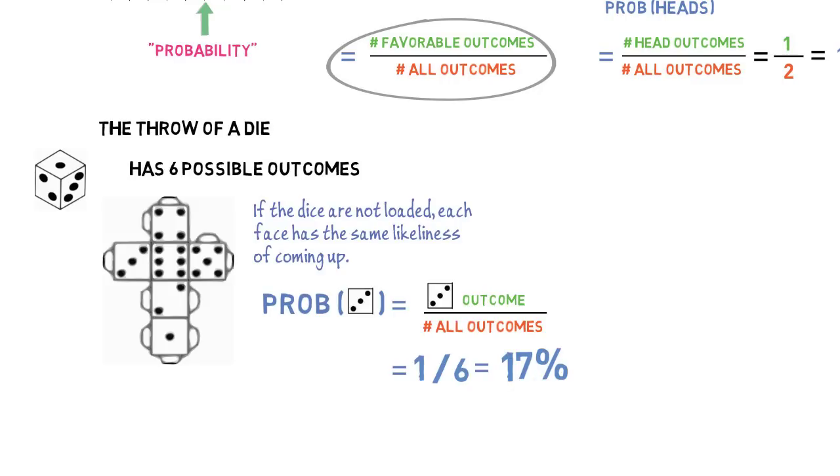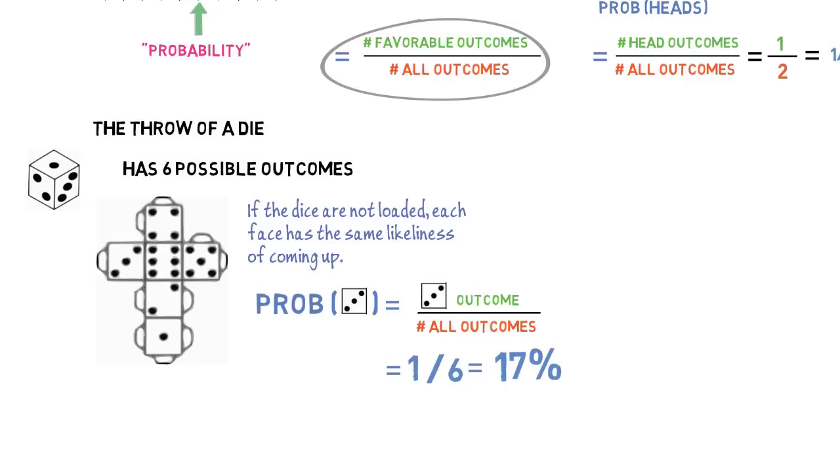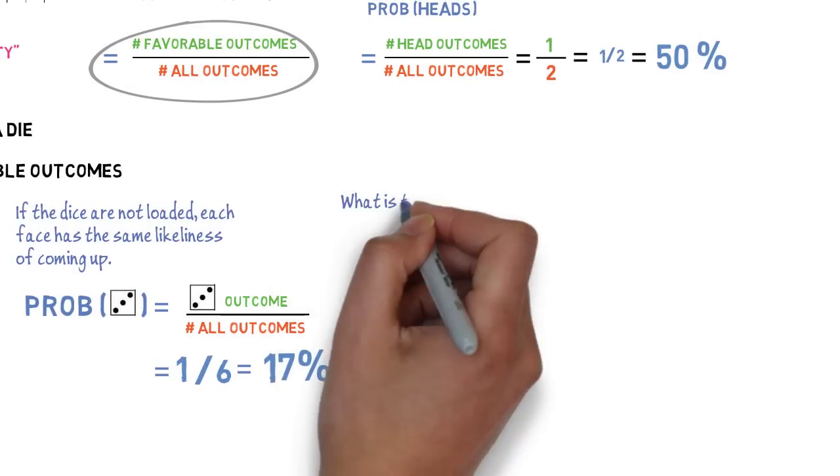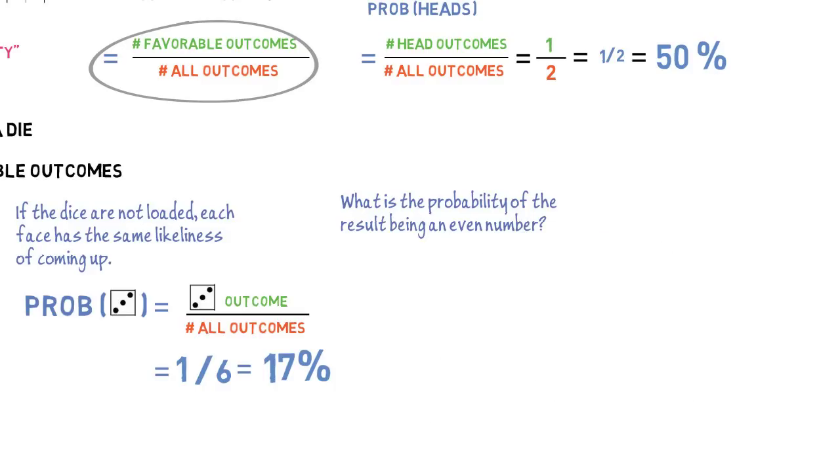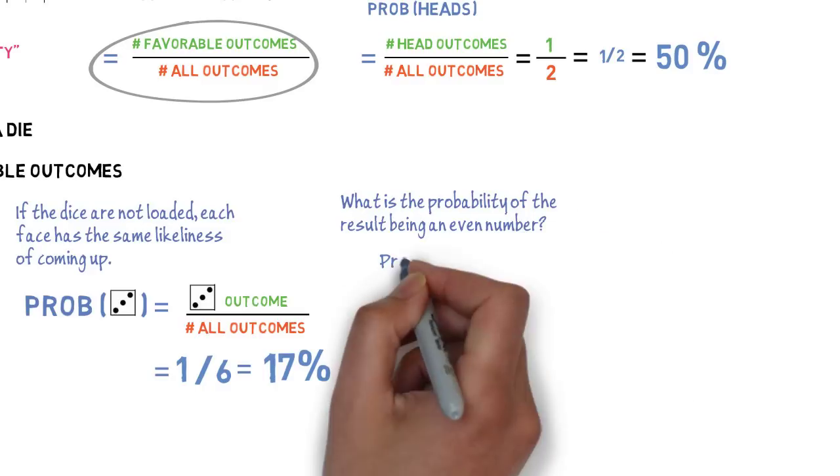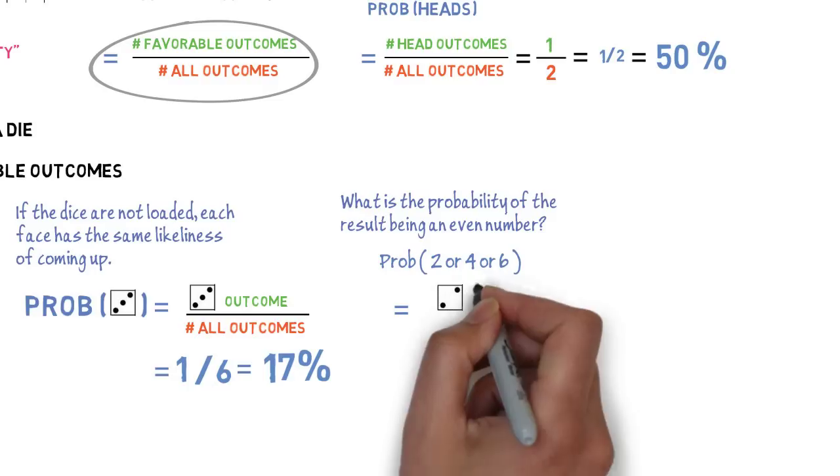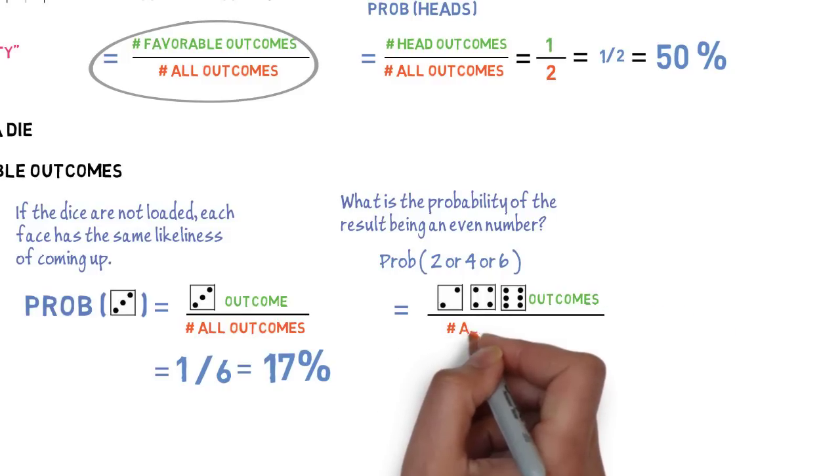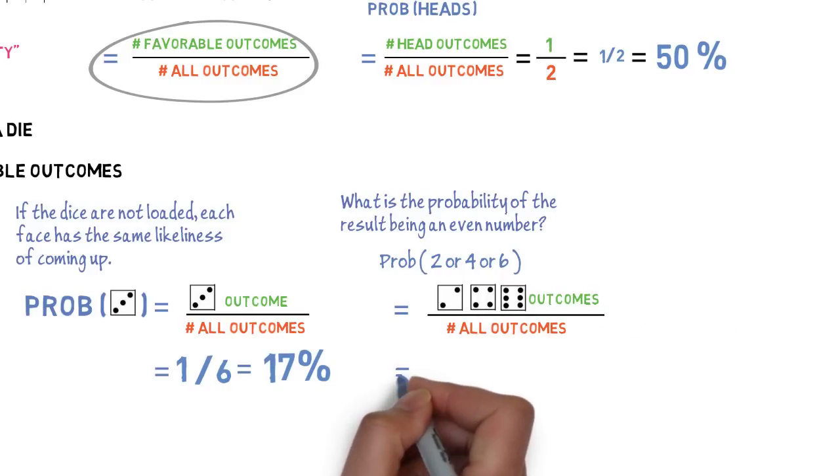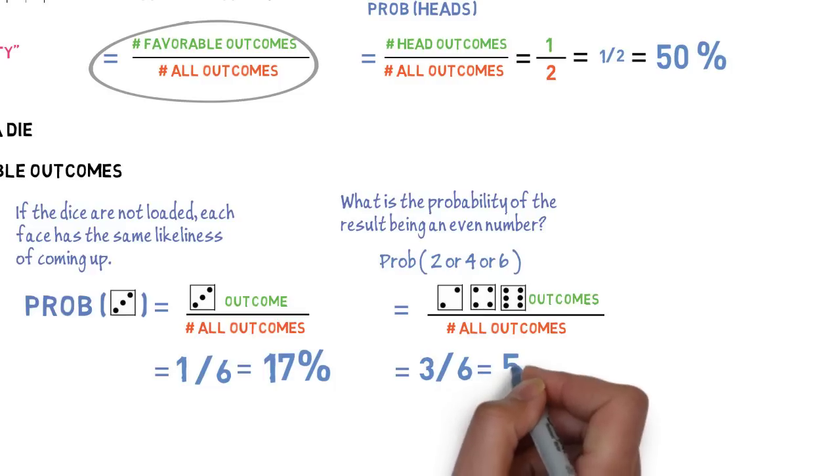Take another example. What is the probability of the result being an even number? The probability of two, four, or six is the number of outcomes that are either two, four, or six divided into six. So, we get 50%.